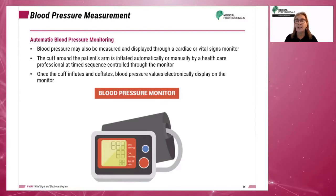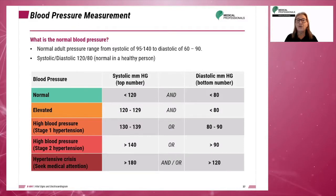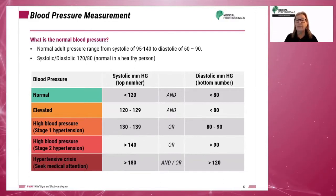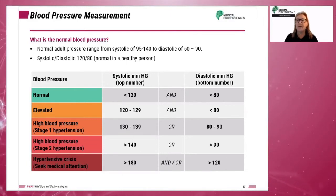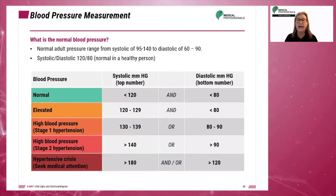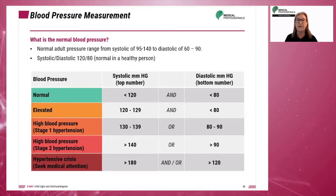Normal adult blood pressure ranges from a systolic range of 95 to 140 to a diastolic range of 60 to 90. A normal systolic/diastolic reading could be 120 over 80. Hypertension increases the workload of the heart.